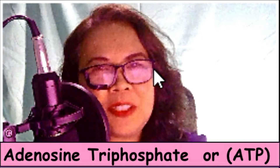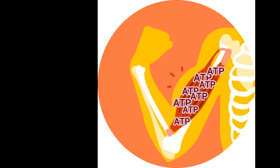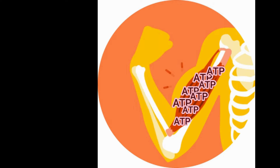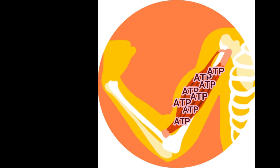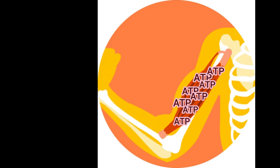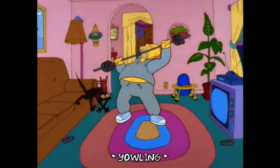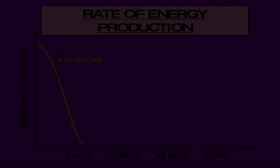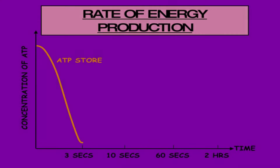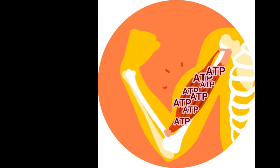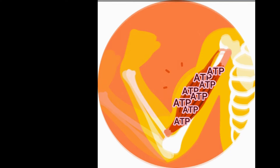ATP is stored in the muscles, so it is available immediately to produce movements. Unfortunately, there is a limited supply of ATP within the muscle cell, enough for 2 to 3 seconds of maximal effort. Therefore, to keep supplying the body with energy, ATP has to be resynthesized.